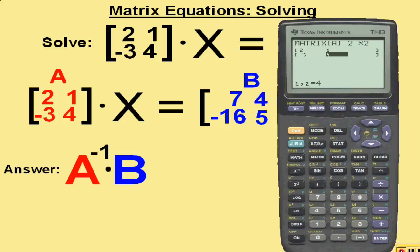Once we have matrix A in, we go back to the matrix button, arrow right to edit, and arrow down to B, and hit enter. We have to make matrix B a 2 by 2 also, and then we will enter the numbers for matrix B.